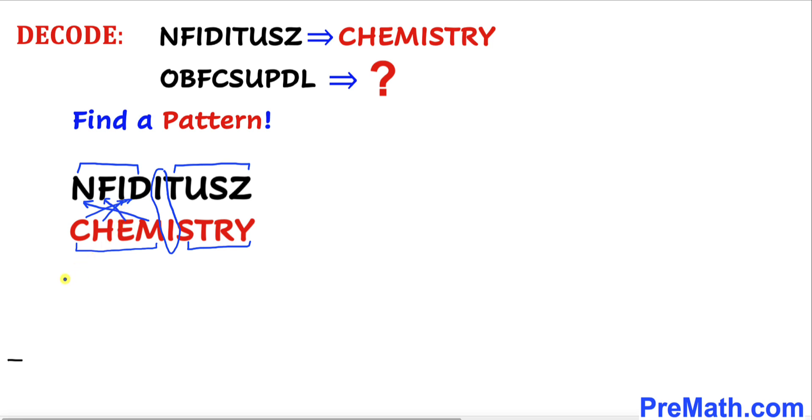can see Y goes to Z, R goes to S, T goes to U, and S goes to T. Now we are going to apply the same pattern to this word to decode it. So let's go ahead and